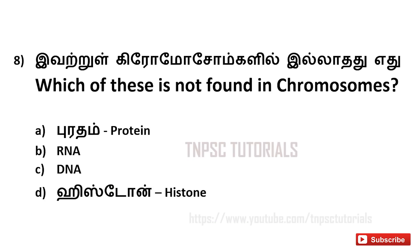Eighth one: Which of these is not found in chromosomes? A. protein, B. RNA, C. DNA, D. histone. And the answer is B. RNA.